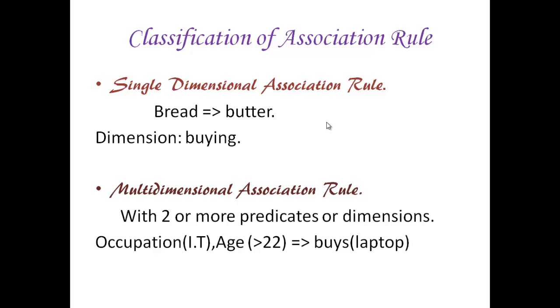In single-dimensional association rule, you have one dimension or predicate. That is, items in a rule refer to only one dimension or predicate. Consider this example: if a person gets bread, he gets butter. So here you have only one dimension, that is buying.